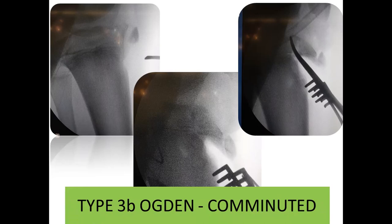Redefining Ogden classification: Type 1 is apophysis only — 1A minimally displaced single fragment, 1B comminuted or grossly displaced. Type 2A is a fracture line going into the epiphysis but not exiting into the joint, with the anterior proximal tibial physis involved but cartilage and joint side preserved; 2B is comminuted or completely displaced. Type 3 exits into the joint, again A and B for simple versus comminuted.